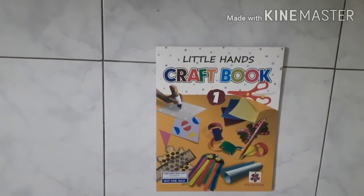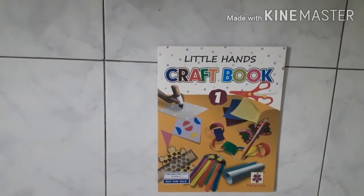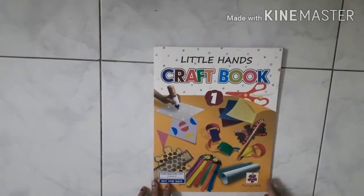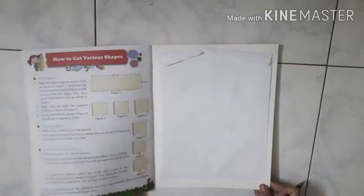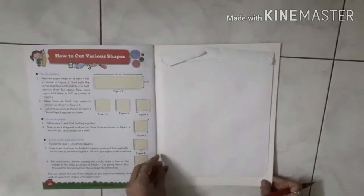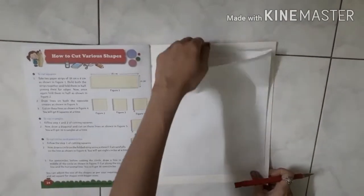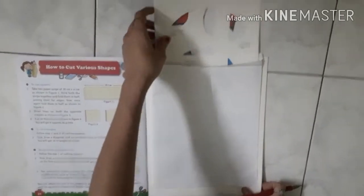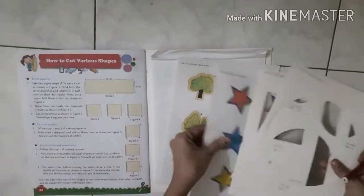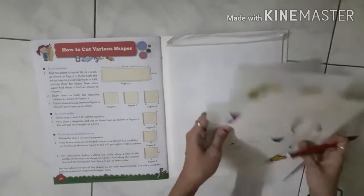Hello kids, from today we will start our craft subject. See, this is your craft book. In the last page of the book there is an insert with material for craft. You have an envelope given at the back which contains all the materials needed for the craft book activities.